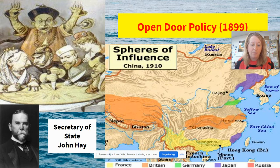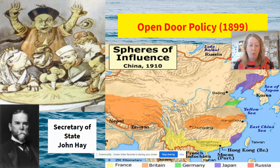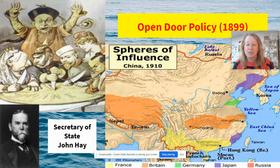So McKinley instructed his Secretary of State, John Hay, to send a note to the rest of these European countries, which basically said it's important that we all have equal access to China, and we would like to be a part of this as well. What's interesting is that his note didn't require any level of response, so he took the lack of response as one of acceptance, and the United States was able to get in on the trade game.